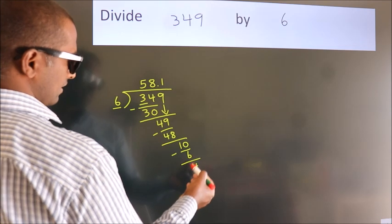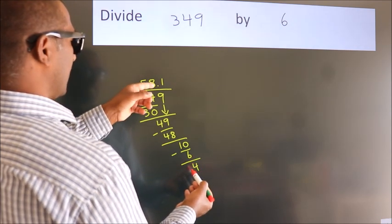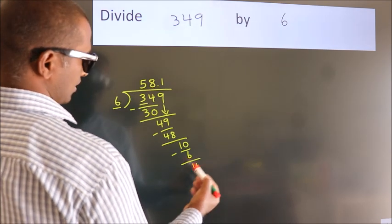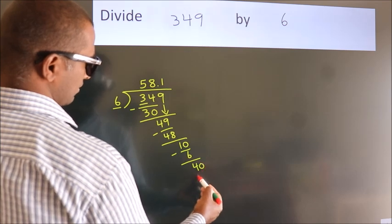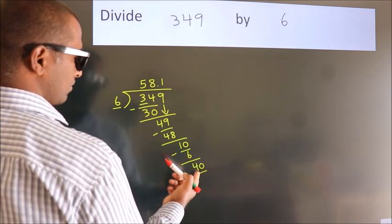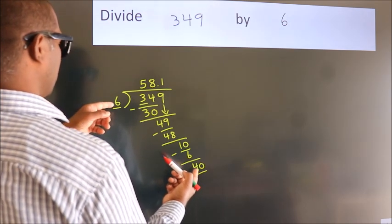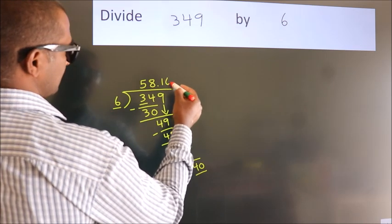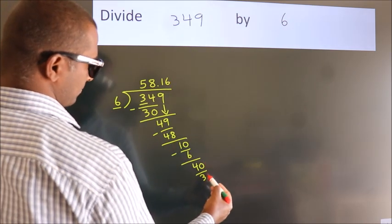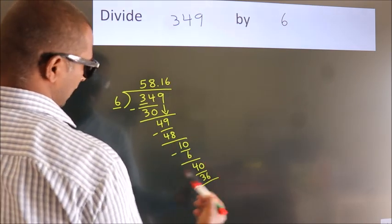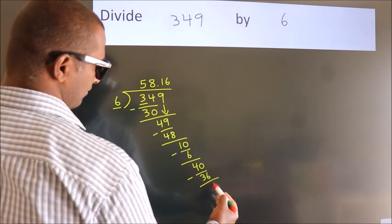After this, we already have the decimal. So directly take 0. So 40. A number close to 40 in the 6 table is 6 6s, 36. Now we subtract. We get 4.